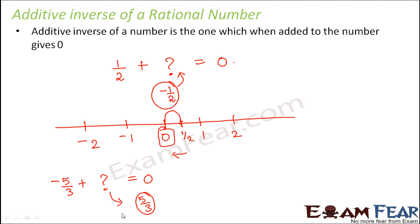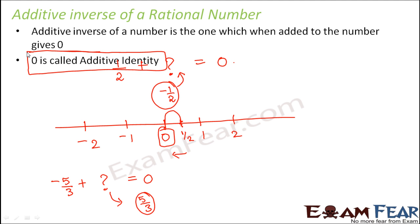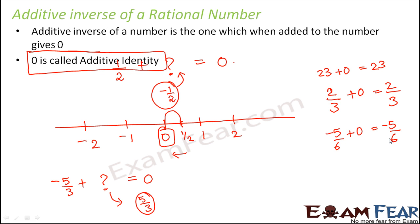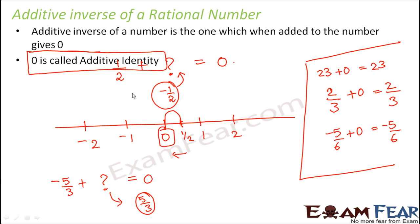If you add plus 5/3 to minus 5/3 you get 0. Because of this property, 0 is called additive identity. Why is 0 called additive identity? Because if you add 0 to any number the number remains the same. For example, 23 plus 0 is 23; 2/3 plus 0 is 2/3; minus 5/6 plus 0 is minus 5/6. So 0 retains the identity of that number — that is why 0 is called additive identity, and because of this we have the concept of additive inverse.